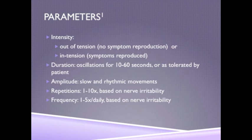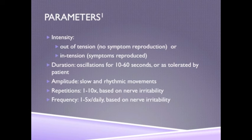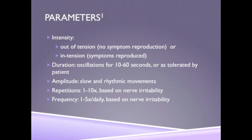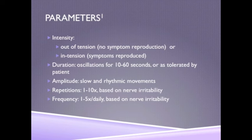Intensity should be out of tension with no symptom reproduction, or in tension with symptom reproduction. Duration should be ten to sixty seconds, or as tolerated by the patient. Amplitude should be slow and rhythmic. There should be one to ten repetitions depending on nerve irritability, and frequency should be one to five times per day depending on nerve irritability.